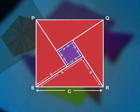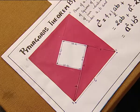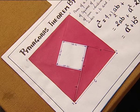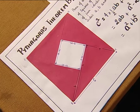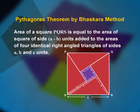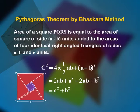The area of square PQRS equals the area of the square of side (a - b) units plus the area of four identical right angle triangles of sides a and b units. The area of square PQRS is c², which equals four times the area of the right angle triangle (½ab) plus (a - b)².